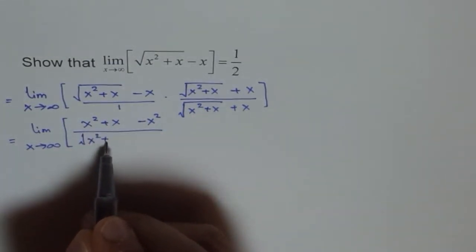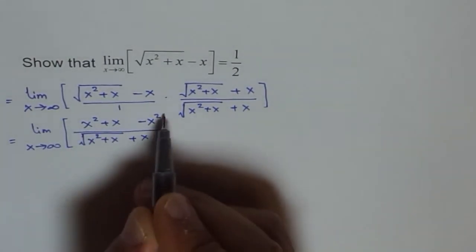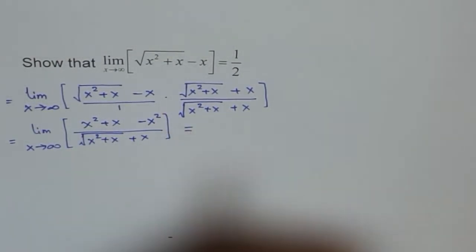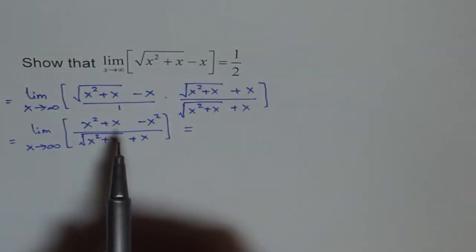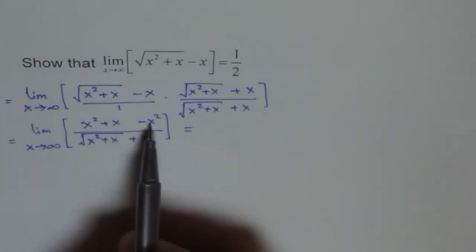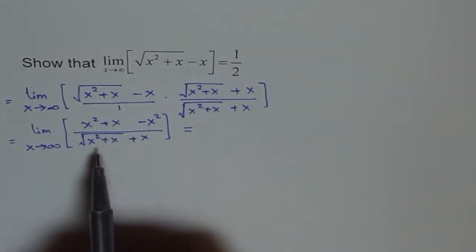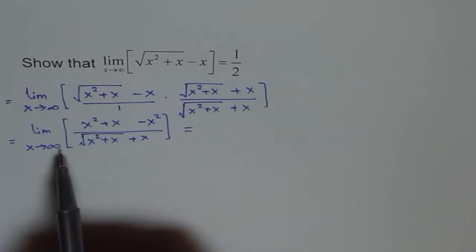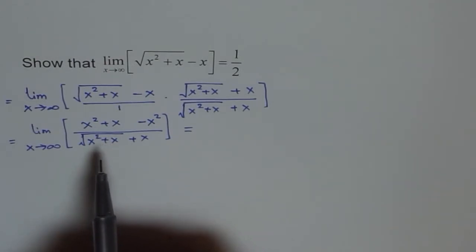The denominator is square root of x squared plus x plus x. Now in the numerator, x squared and x squared cancel out and we are left with just x. In the denominator, we can factor out x squared and see what is left behind.